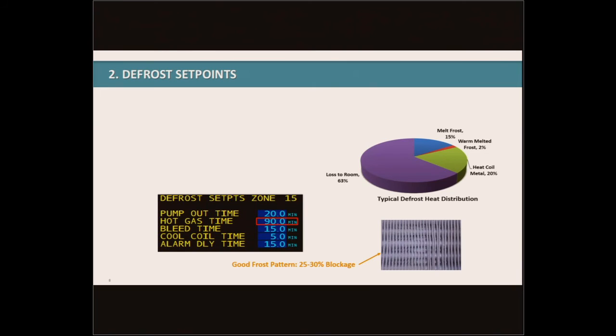Moving over to defrost set points, evaporator defrost is another opportunity to save energy, primarily because defrost introduces a heat load into the refrigerated room. So where does this heat come from? If you look at the pie chart here, when an evaporator goes into defrost, and this is specific to hot gas defrost, but you can really use the same concepts for other types of defrost, like electric defrost. But in the blue slice of the pie there, you can see the energy from the defrost to actually melt the frost in the coil only constitutes about 15% of the energy that's used in the defrost cycle. The big slice of the pie there, the loss to the room, is 63%. So 63% of our heat energy is actually going to losses in the room, which doesn't make for a very efficient cycle. Unfortunately, that's what we're stuck with because we do need to have defrost on our evaporators.